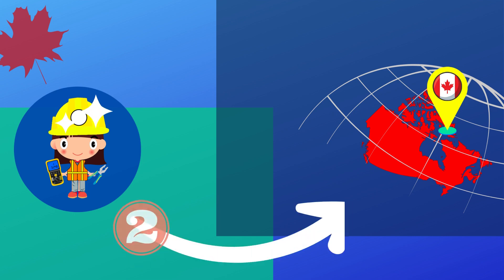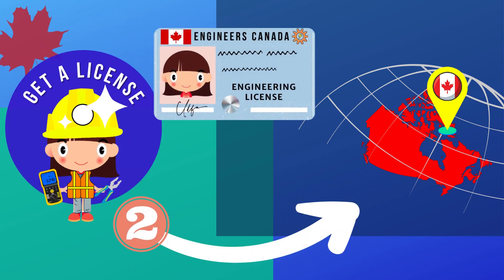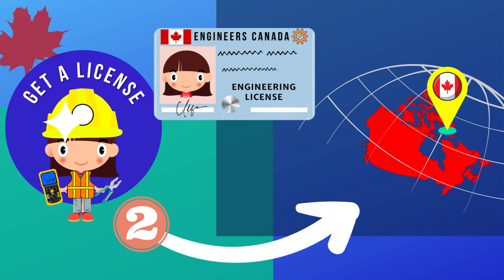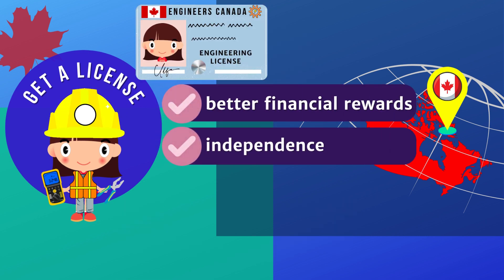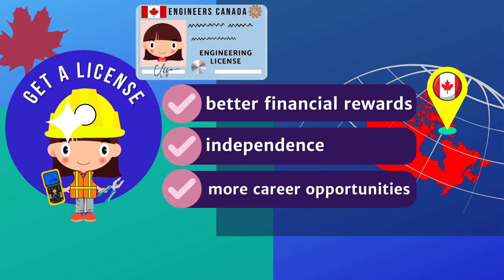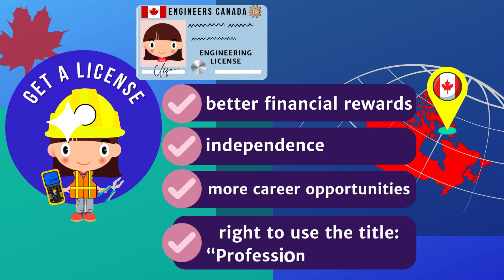Another option to practice your profession is to get a license and become an official engineer in Canada. While this path may require time and effort, it is most beneficial as it offers better financial rewards, independence, more career opportunities, and the right to use the title of professional engineer.